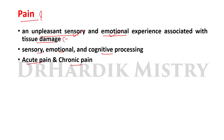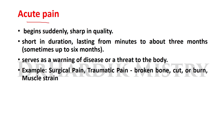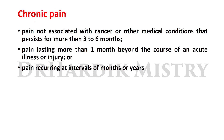We can classify pain depending upon the duration: acute pain and chronic pain. Acute pain begins suddenly and is sharp in quality. It is short in duration, lasting from minutes up to three to six months, and serves as a warning of disease or threat to the body. Examples include surgical pain, traumatic pain from a broken bone, cut, injury, burn, or muscle strain.